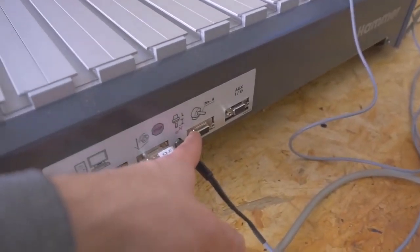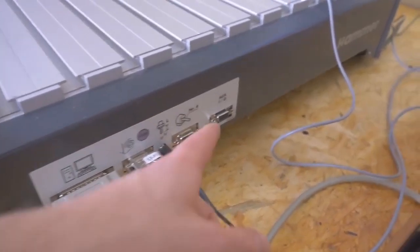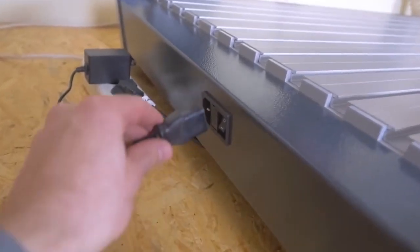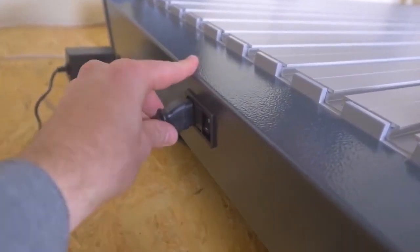Then a plug for the fourth axis if you have the right controller and one for another digital output. On the other side there's just a plug for power and the on-off switch.